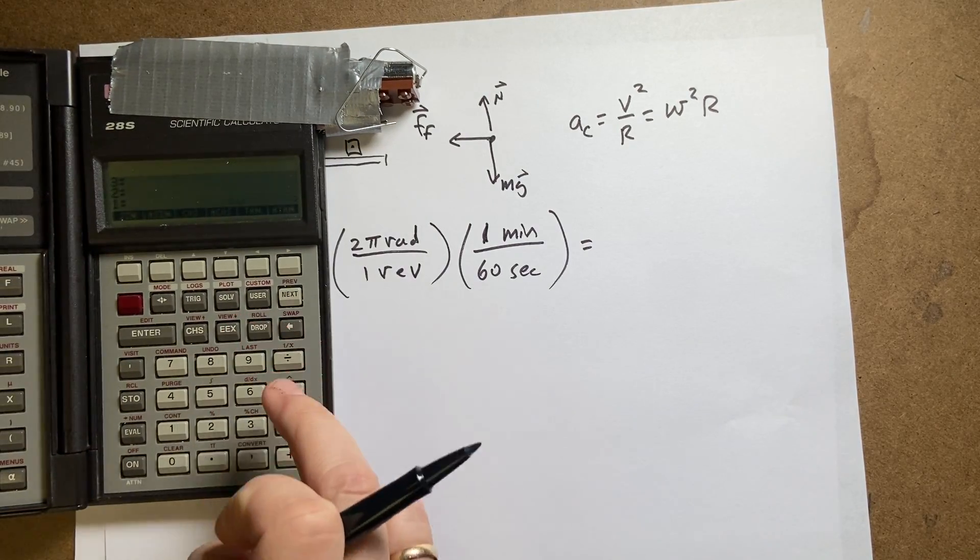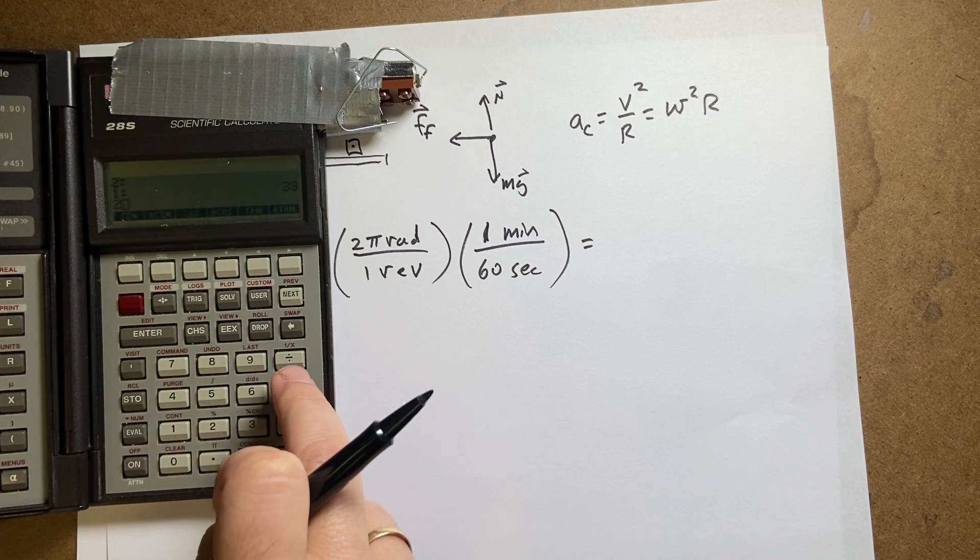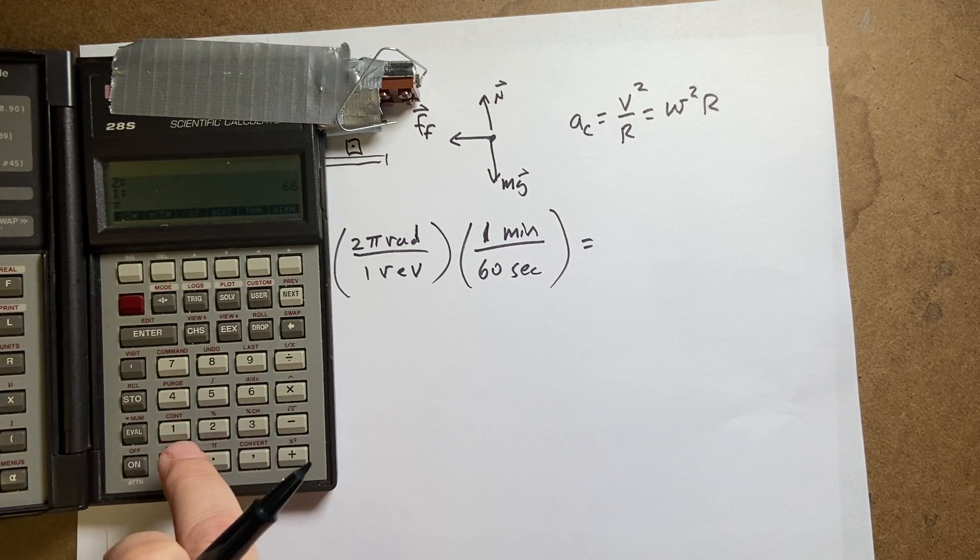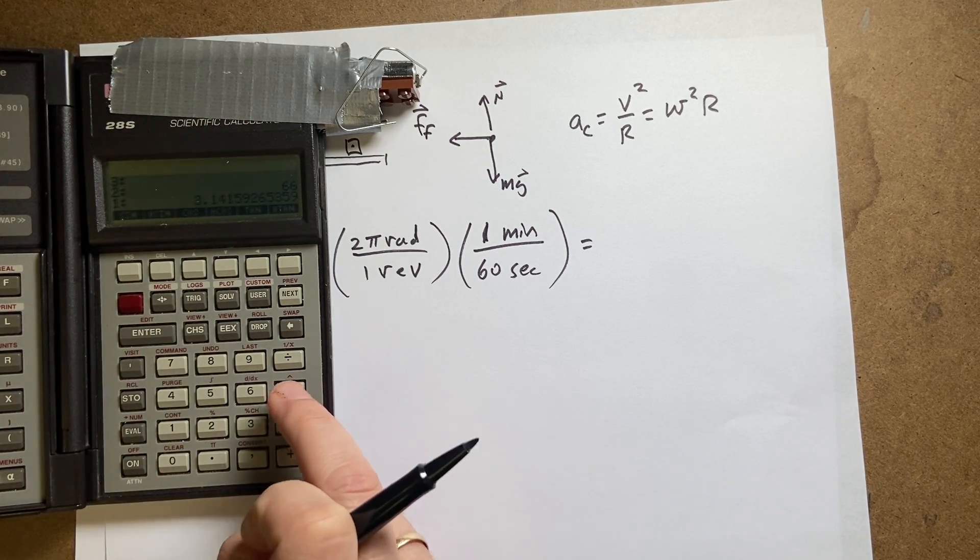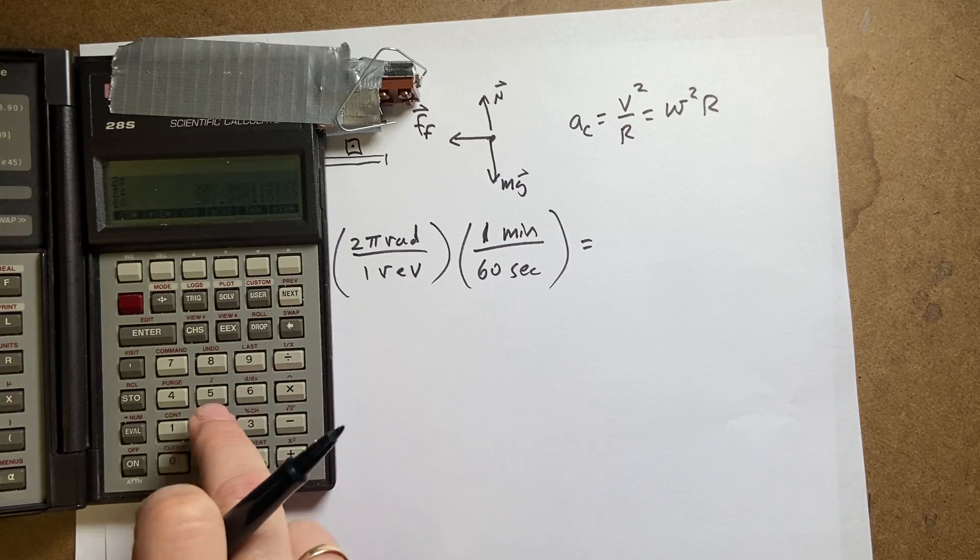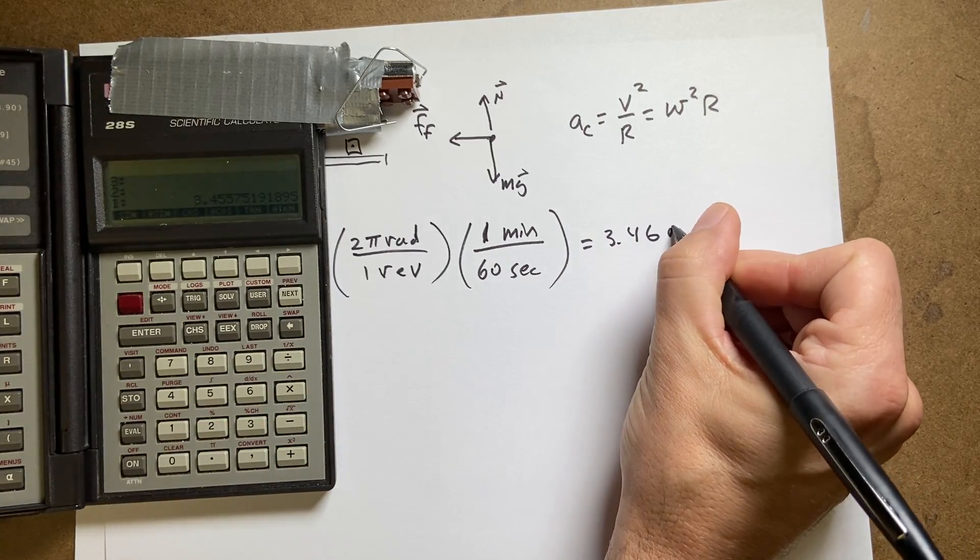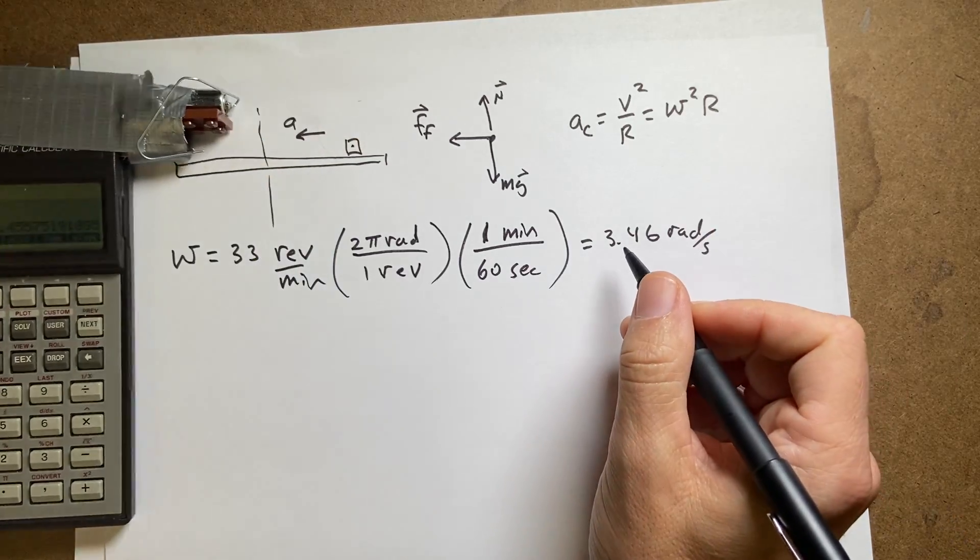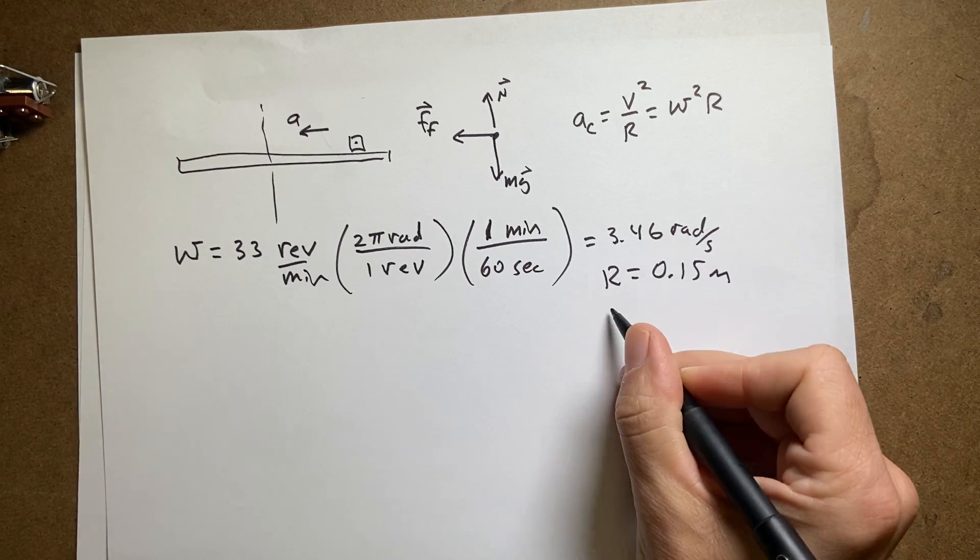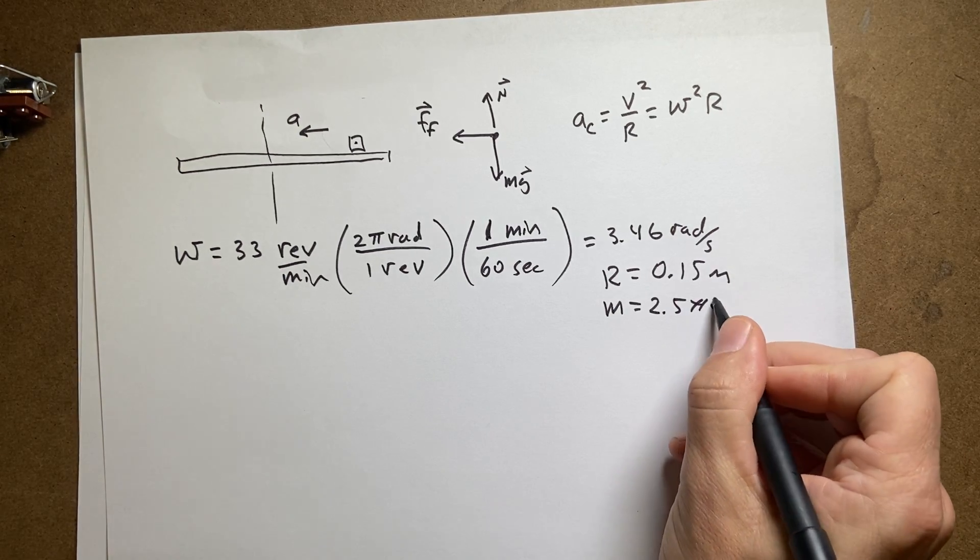So I get 33 revolutions per minute times two times pi and then divide by 60. So I get 3.46 radians per second. And then the radius was 0.15 meters. The mass is 2.5 times 10 to the negative third kilograms.